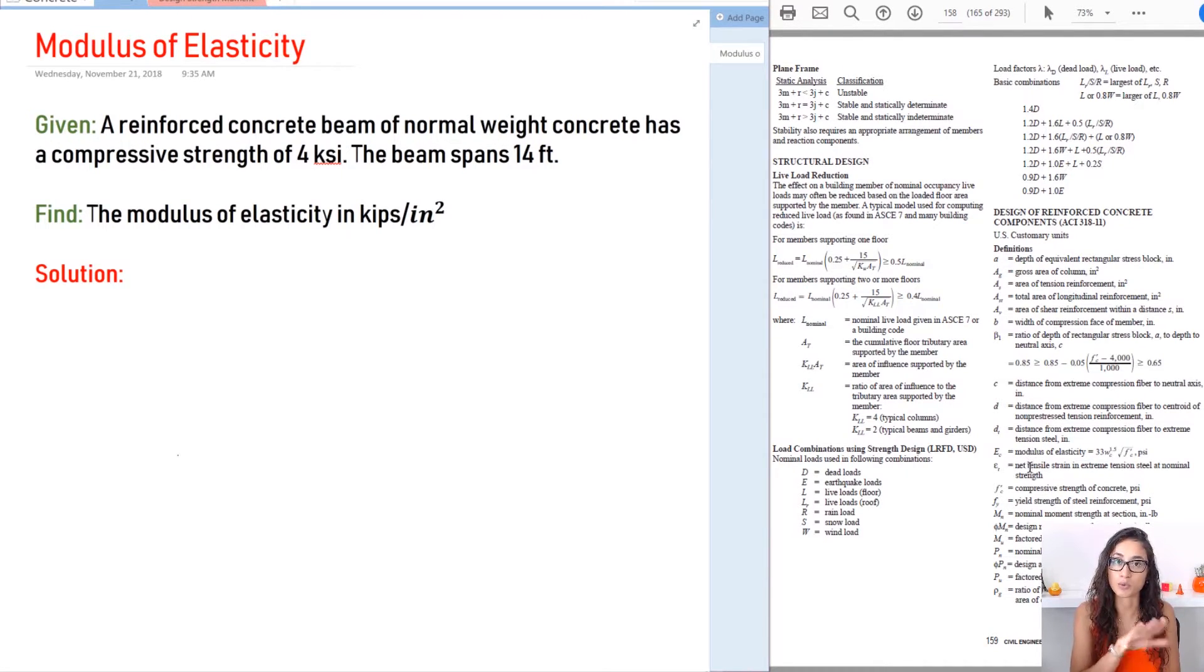Make sure you remember where it is so that you can solve it if you get it during the test. So let's write the equation first. We have Ec equals 33 times the weight of the concrete to the power of 1.5 times the square root of f prime c.